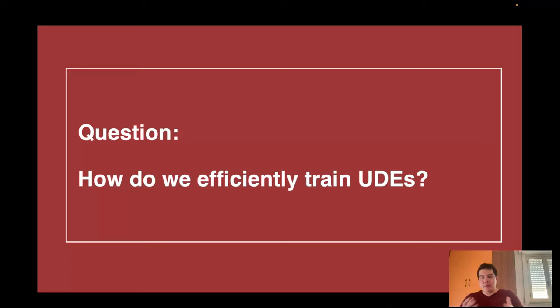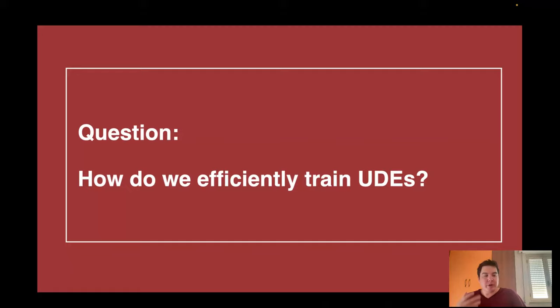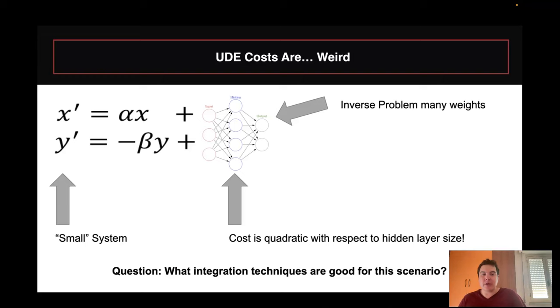Universal differential equations are very useful because prior scientific knowledge improves the ability to do machine learning and extrapolate from very small amounts of data. We see this in many scientific contexts — from chemical reactions to black hole physics — and we can use this as an effective tool. The question then is: how do we effectively train UDEs, and how do we use that to start talking about numerical methods that are better for training UDEs?